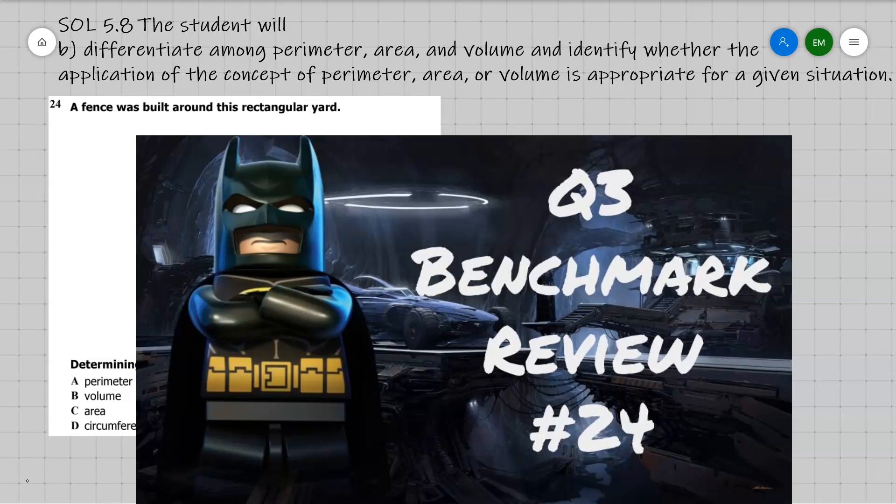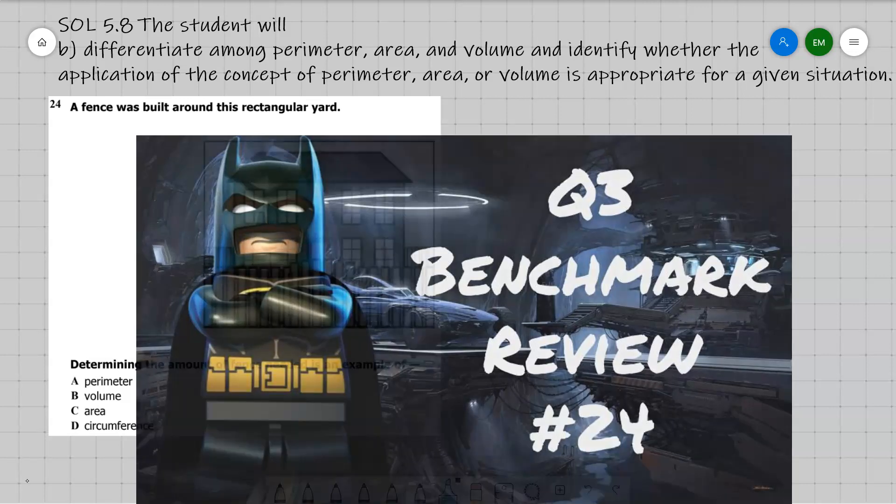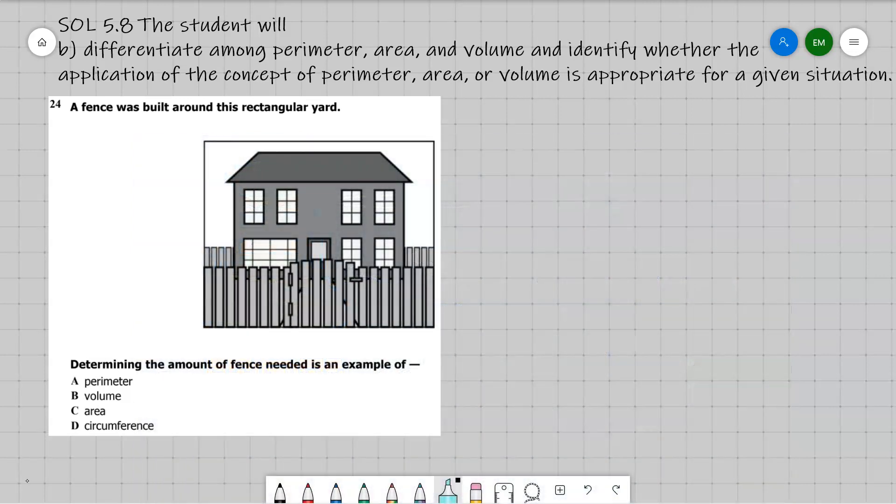But we've been on 5.8A. This is 5.8B, where the student will differentiate among perimeter, area, and volume and identify whether the application of the concept of perimeter, area, or volume is appropriate for a given situation. So they don't actually want me to find the perimeter, volume, or area.